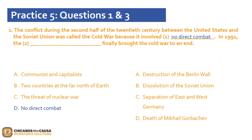For the second part — in 1991, the blank finally brought the Cold War to an end — our options are: A, destruction of the Berlin Wall; B, dissolution of the Soviet Union; C, separation of East and West Germany; D, death of Mikhail Gorbachev. There were events prior to the Soviet's dissolution, such as the Berlin Wall and Gorbachev's unsuccessful reform efforts, but it doesn't say his death ended the Cold War. The only option that fits is B: dissolution of the Soviet Union, because once that happened, the Cold War ended.